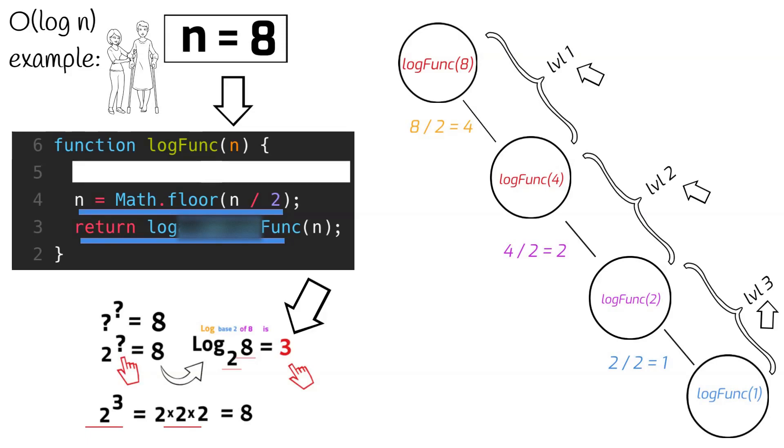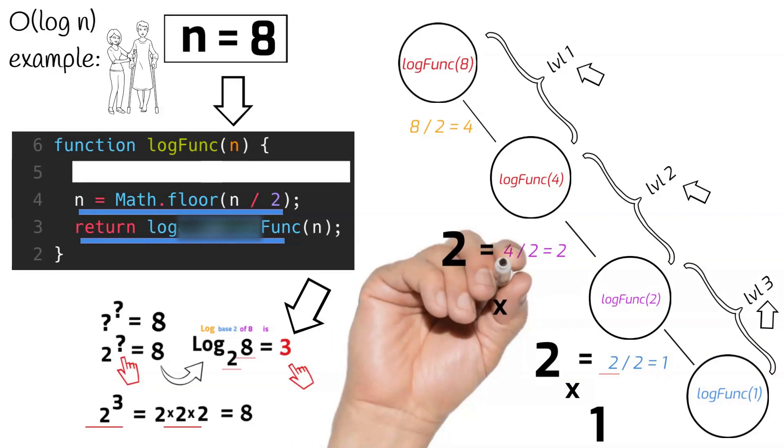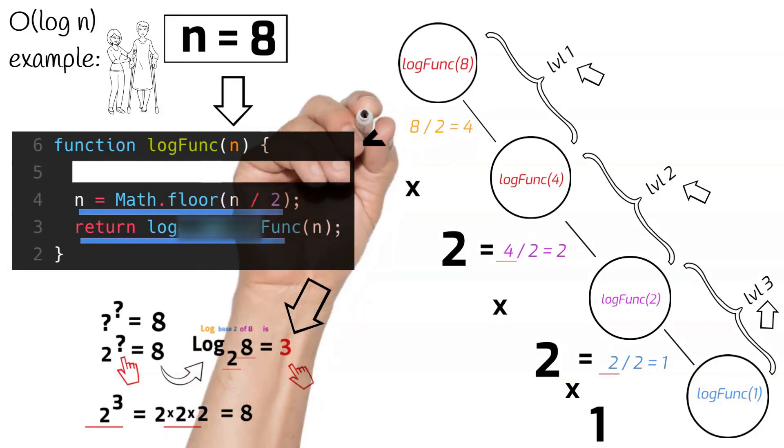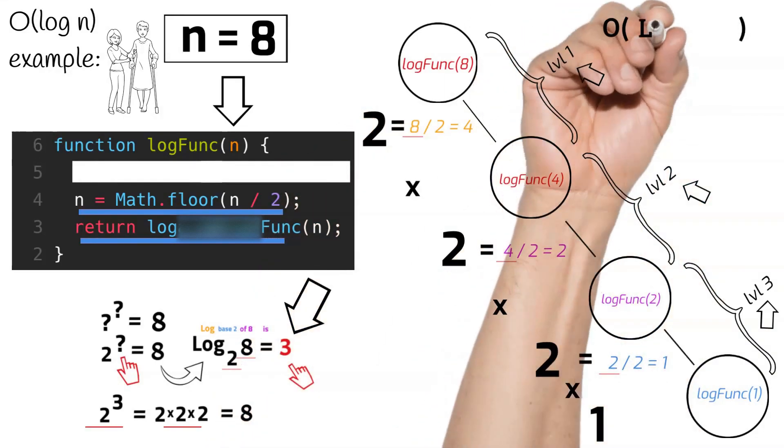And since division is just the inverse of multiplication, we can see that when we do something like this. So that means that this function has a time complexity of O log n.